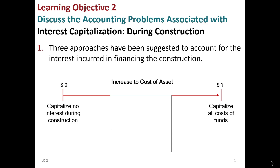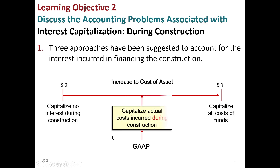When you consider the two different extremes — capitalize no interest during construction versus capitalize all the interest costs — FASB comes up and says we have to have a hard and fast rule. Let's capitalize the interest that happens just during the construction, but even then we have to put some qualifiers around it.